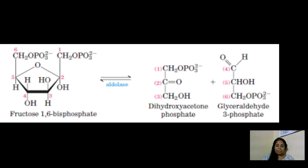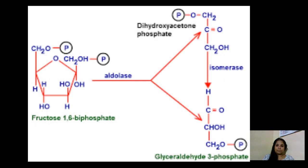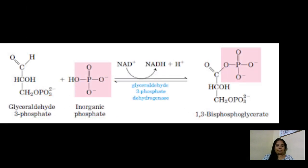The next step is the aldol cleavage reaction. One molecule of fructose-1,6-bisphosphate, a six-carbon compound, is broken down into two three-carbon compounds: dihydroxyacetone phosphate (DHAP) and glyceraldehyde-3-phosphate (G3P). This reaction is catalyzed by the enzyme aldolase. These two products can be interconverted — DHAP can be converted into G3P and vice versa.